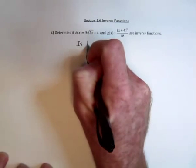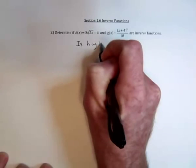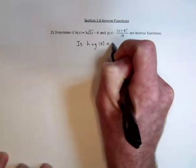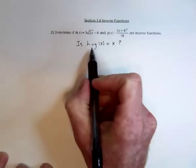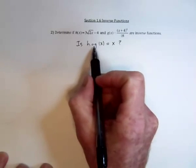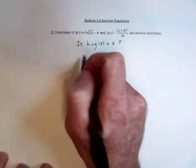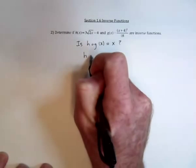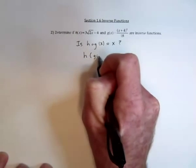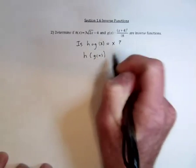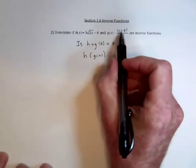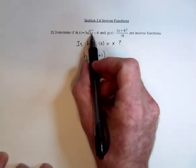is h composed with g equal to just an x? Or do these functions cancel each other out, leaving us with just the x? So h composed with g means take the g function over here and substitute all of that in for this x over here in the h function.